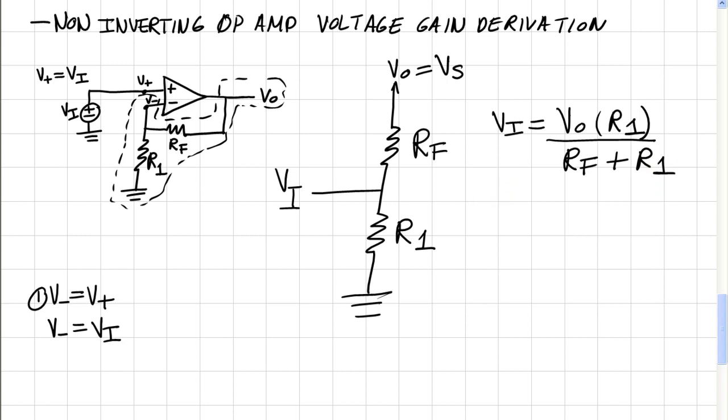And if we solve for V i over V out, this is what we're going to get. But you've got to remember that we're looking for the gain, and the gain is the output over the input.